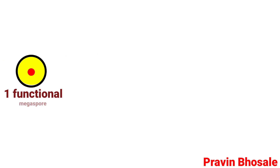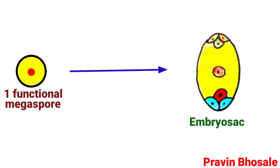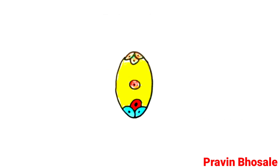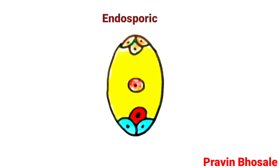Since one functional megaspore forms the embryo sac, it is called monosporic. And since the embryo sac develops within the functional megaspore, it is called endosporic.